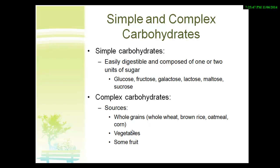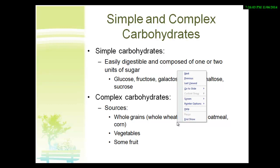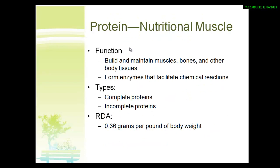Those are some of the issues with carbohydrates and why it's important to try to eat complex carbohydrates — and they also tend to be high in fiber. Now let's look at proteins. Protein is the building block — it helps rebuild tissue and maintain our muscle, bones, and other bodily tissue using amino acids. You have complete proteins and incomplete proteins. Complete proteins come from meat sources; incomplete proteins come from grains and vegetables, but you can combine them to get all your essential amino acids.